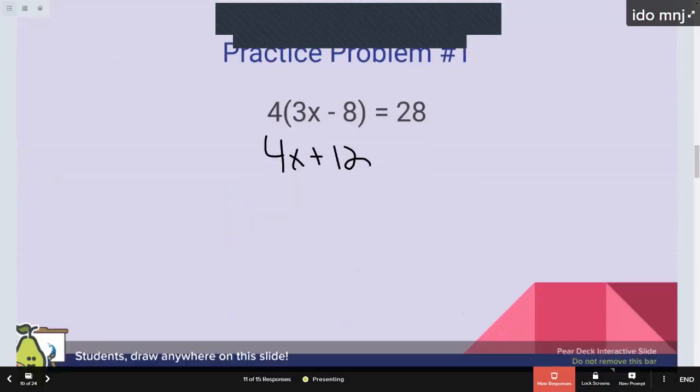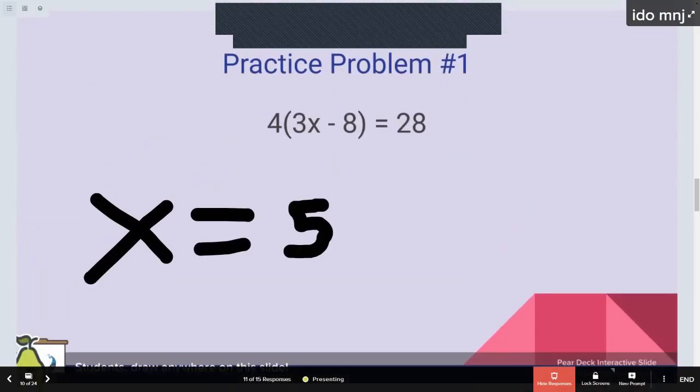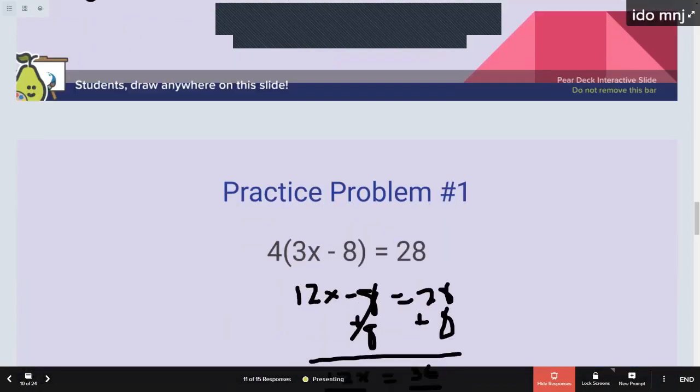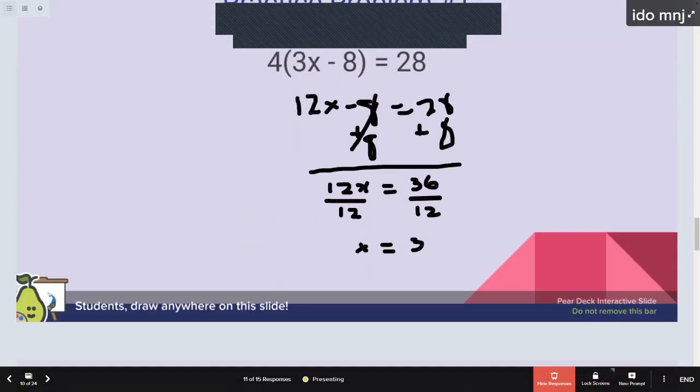Okay. Yep. So this person did not distribute correctly. They added the 4 maybe. So remember when you're distributing, you have to multiply. So it should be 4 times the 3x and 4 times the negative 8. So make sure that when you're getting rid of these parentheses by distributing, that you're not like replacing or adding. I've seen students do a number of things over the years. So it could be anything.